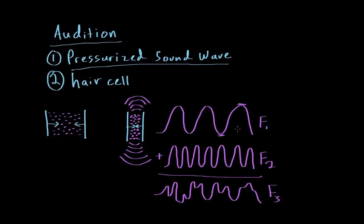The ear is able to break down complex frequencies because sound waves actually travel different lengths along the cochlea. Now that we've talked about what a pressurized sound wave is, let's look at the hair cells and the anatomy of the ear in general.